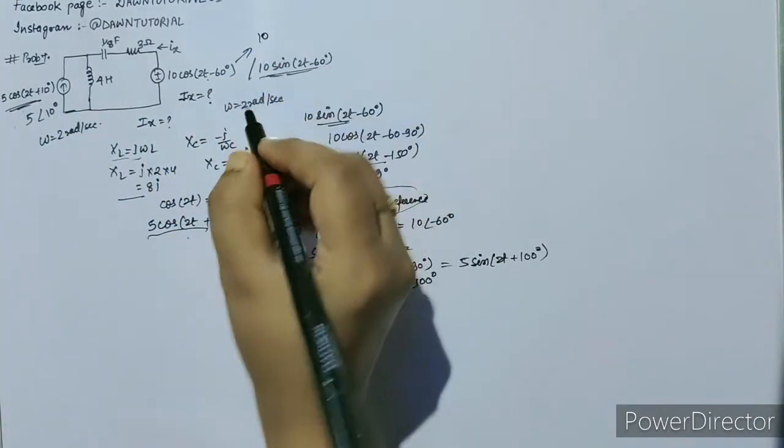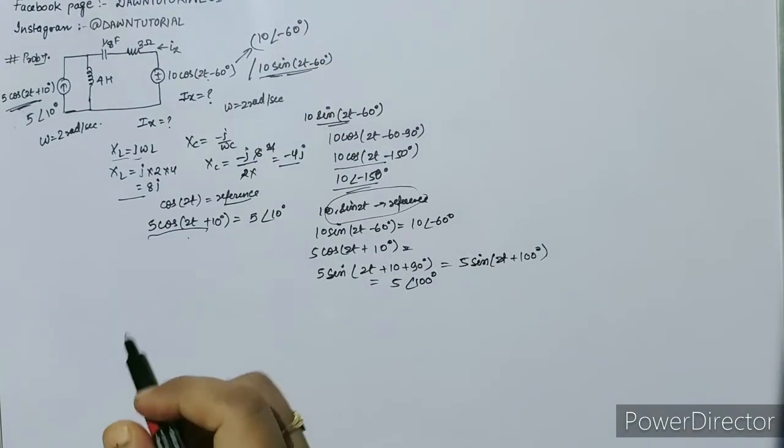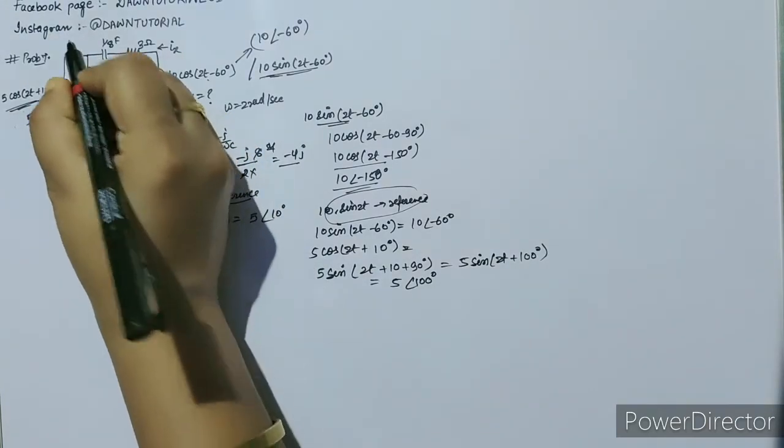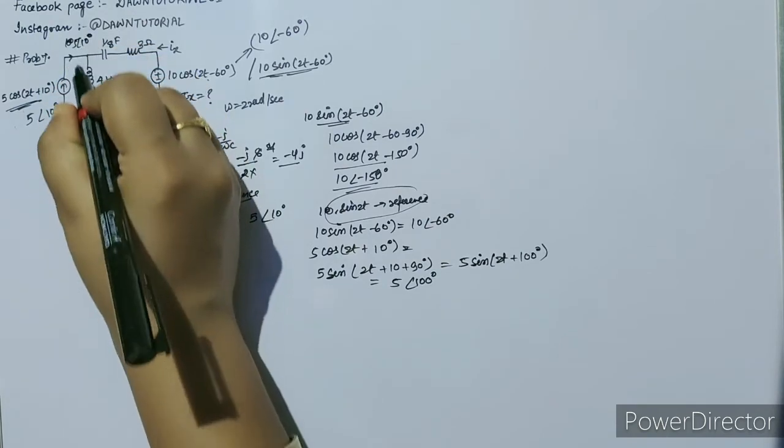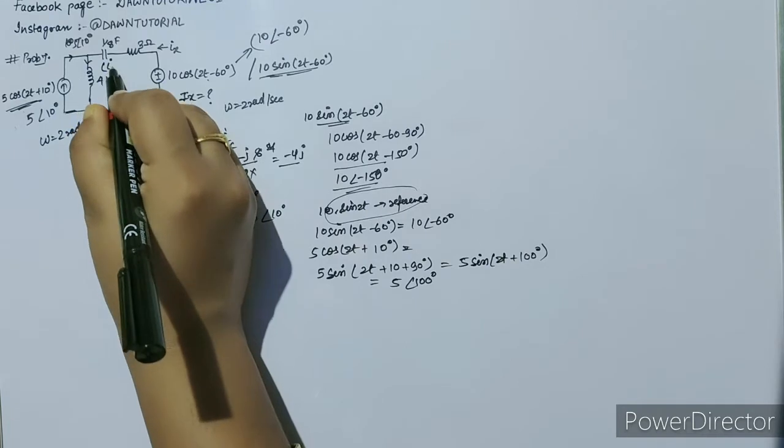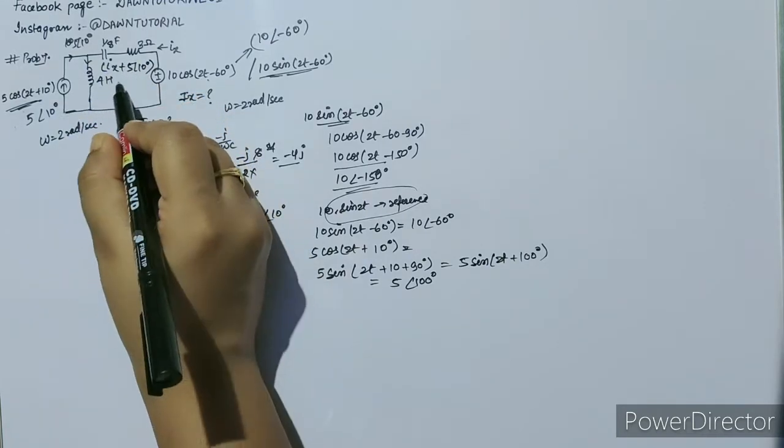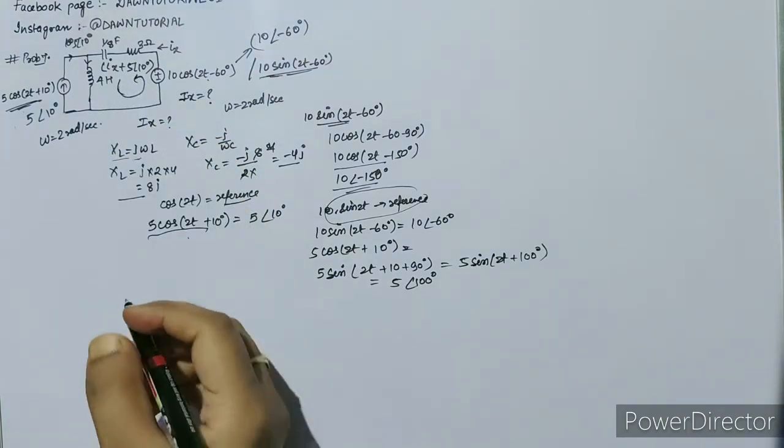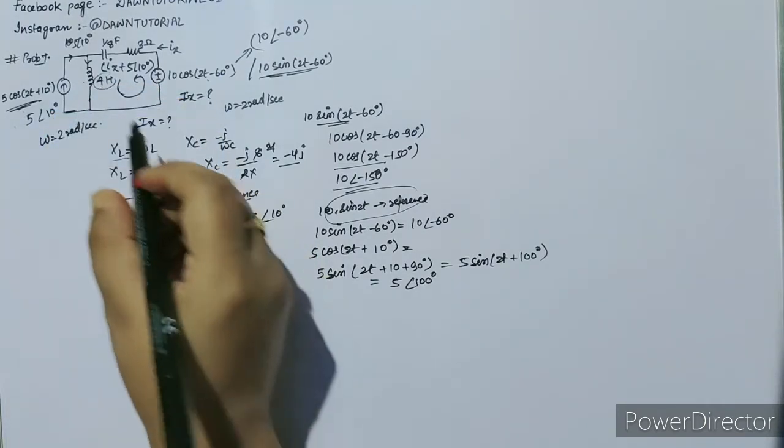Simply we can write this in phasor domain as 5∠10° and this as 10∠-60°. Now see, this is current, so from here ix is flowing. Here 5∠10° is flowing, so in this branch, current will be ix plus 5∠10°. Now apply KVL in this loop.